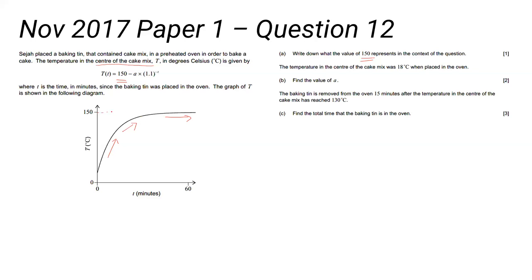So write down what the value of 150 represents in the context of the question. Now a common wrong answer here is to say 'Oh, it's the asymptote' or 'It's the maximum value of the graph.'